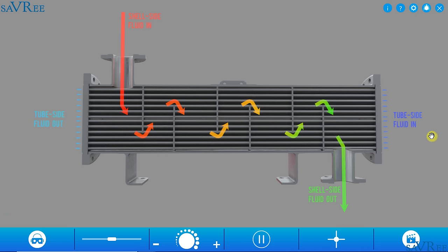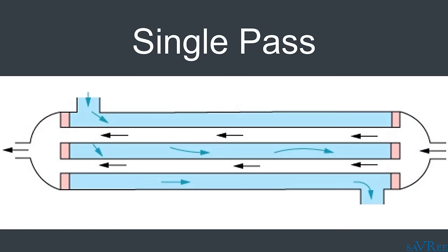If the tube side fluid came in from the right, went out on the left, then looped back and exited on the right, that would be a multi-pass design. The shell side fluid in this design does pass multiple times over the tubes, making it a multi-pass heat exchanger. A single pass design — where the shell side fluid simply drops straight through with no baffles — is actually quite rare, because it's not very efficient. You do see it in steam condensers and generally when changing the state of a fluid.